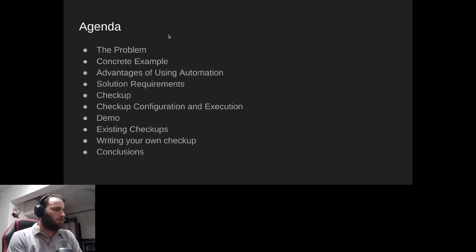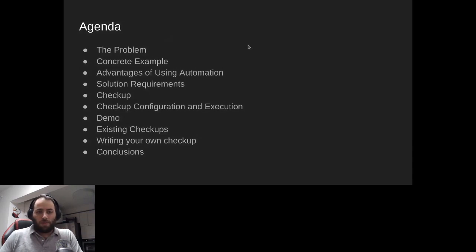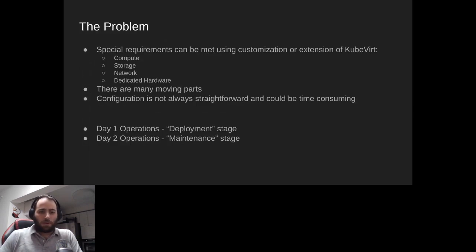The general problem is that special requirements can be met using customization or extension to Kubernetes. It can be on the compute, storage, network, or dedicated hardware, or a combination of these. There are many moving parts in a Kubernetes cluster — hardware, software — and configuration is not always straightforward and could be time consuming.